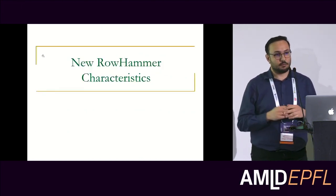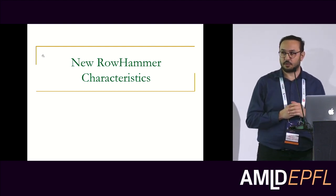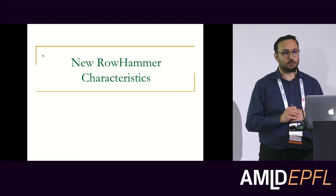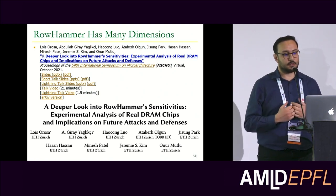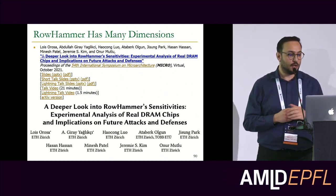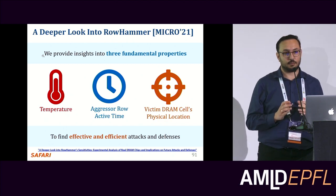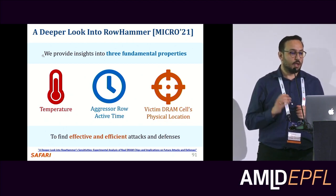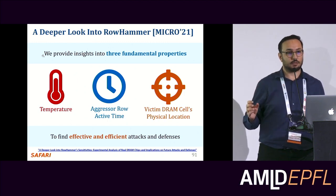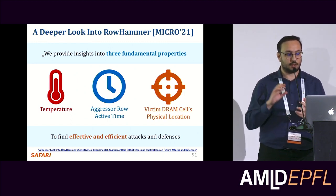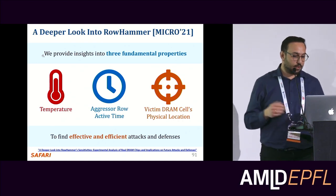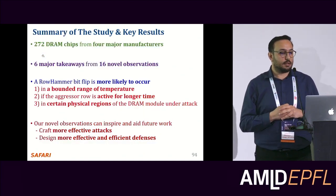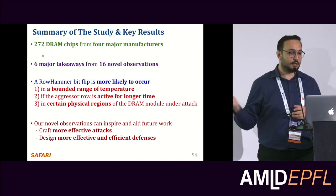We also wanted to understand Rowhammer more to find better solutions, looking at it from different dimensions in a work also published in MICRO last year. We provide insights into three fundamental properties of Rowhammer at the circuit level: how Rowhammer vulnerability changes with temperature, how it changes with the aggressive row's active time, and how it changes with the physical location of DRAM cells. We do this to find effective and efficient attacks and defenses.